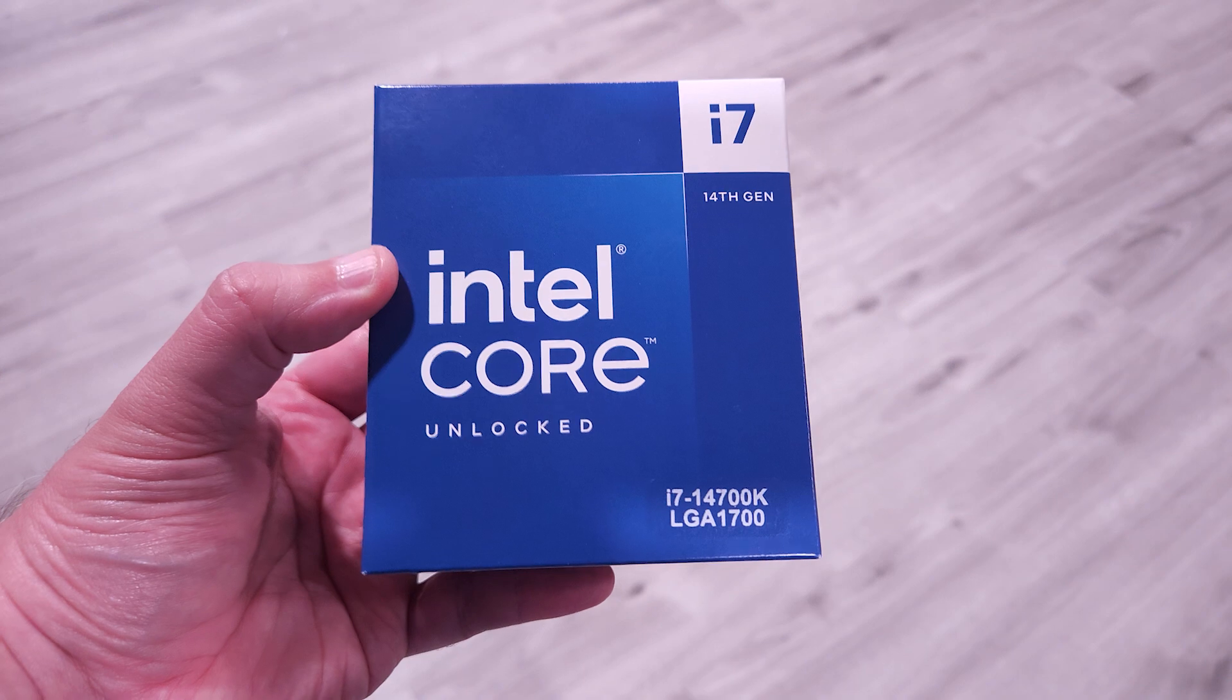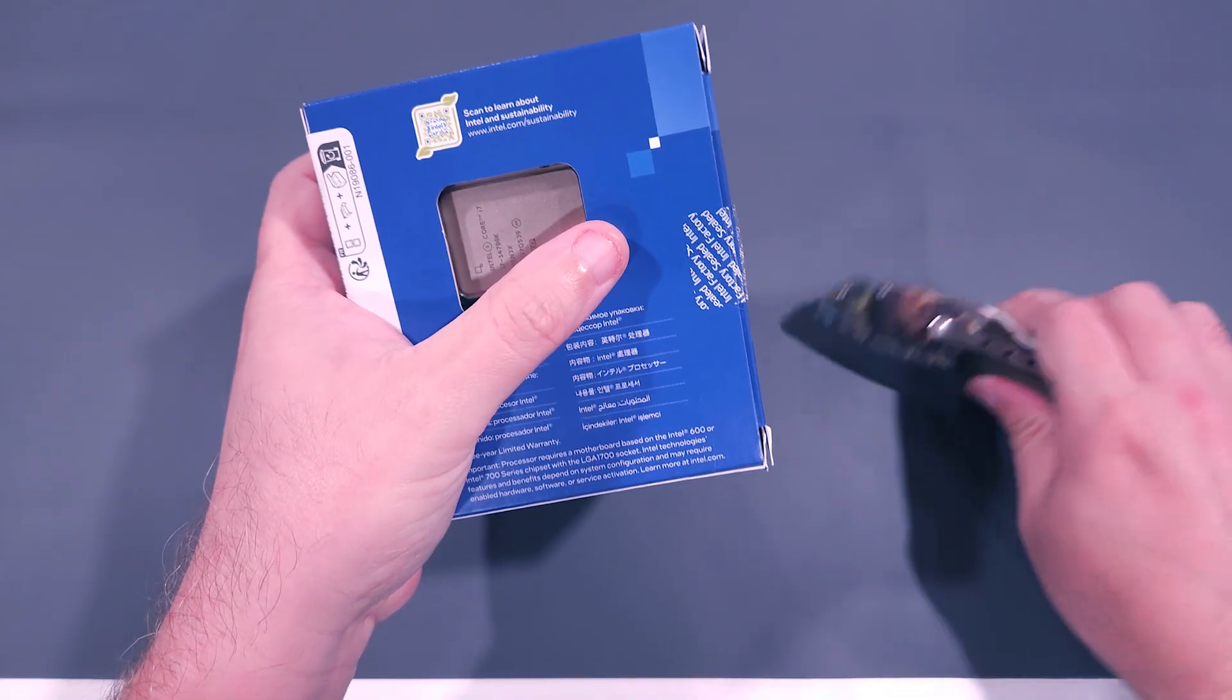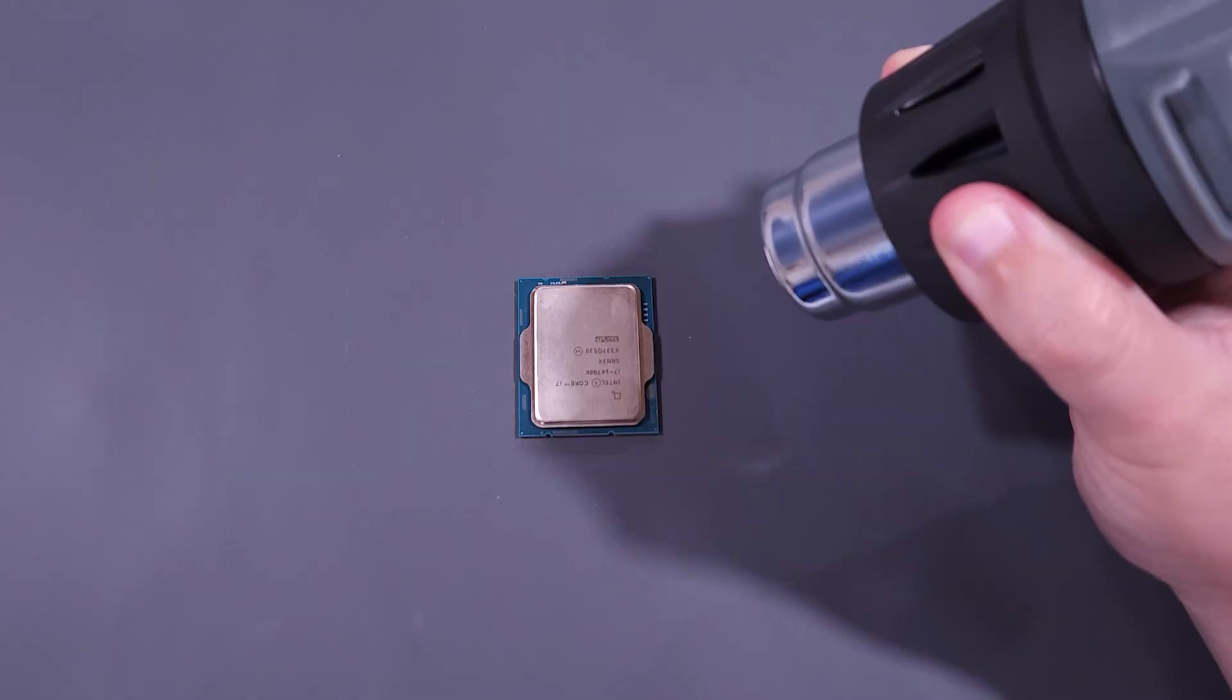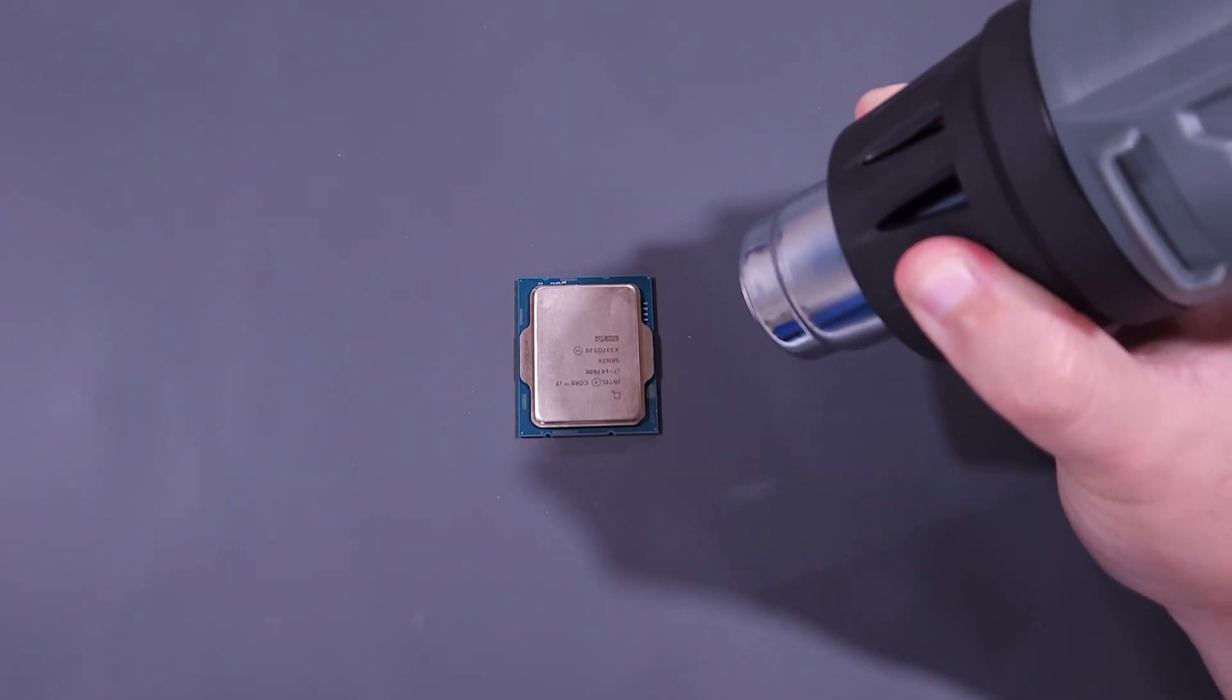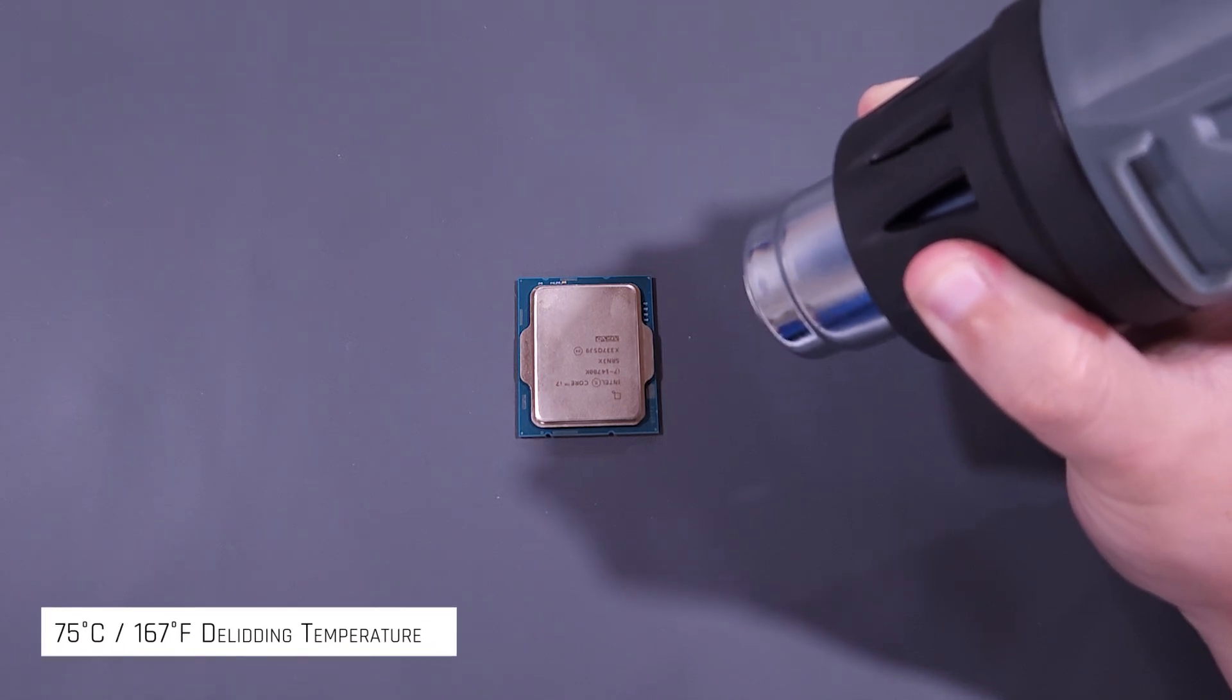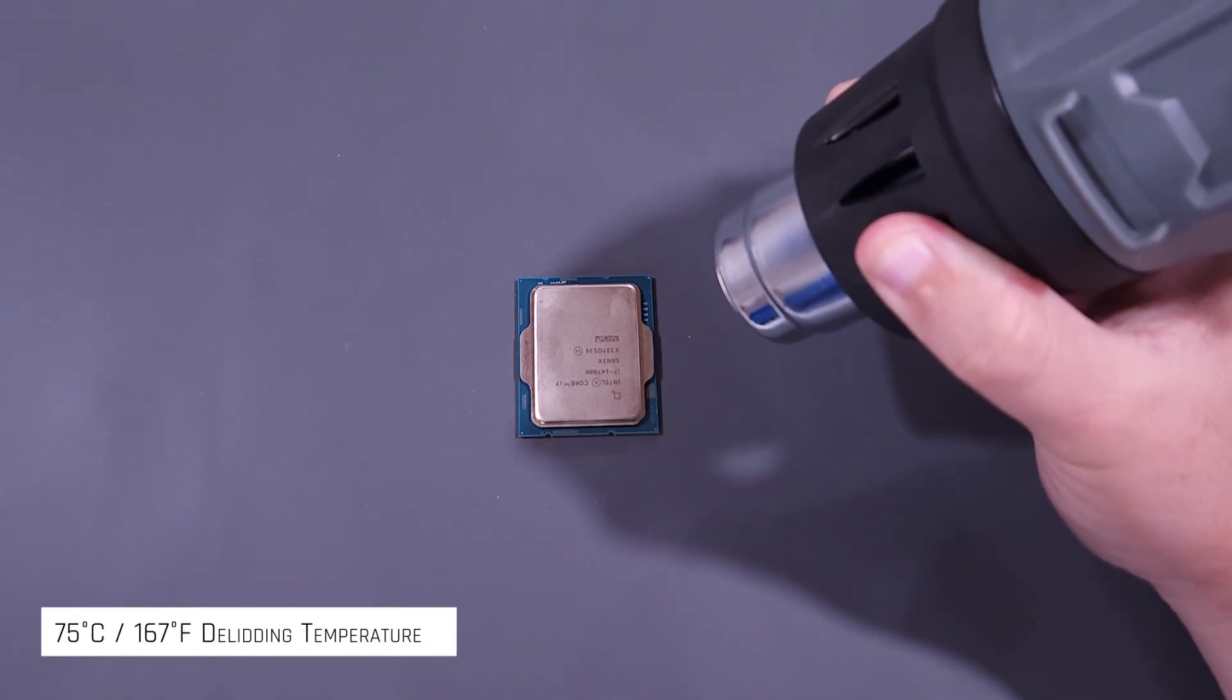On to the delid process. Let's cut the factory seal, get the box open, and remove the CPU. I'll lay the processor on a heat-resistant silicone mat and using a variable temperature heat gun configured to output 75 degrees, warm the IHS for two to three minutes.